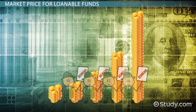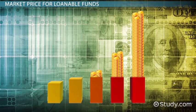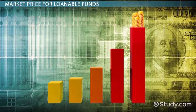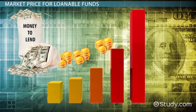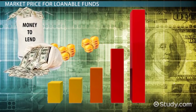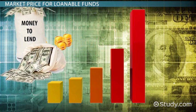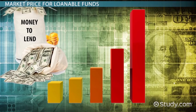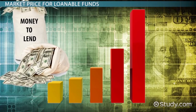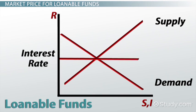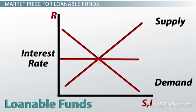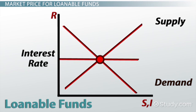On the other hand, as the interest rate for loanable funds increases, the supply of loanable funds also increases because higher interest rates make saving more financially attractive. Eventually, the interest rate for loanable funds will reach equilibrium, where demand for loanable funds equals the supply offered for investment.